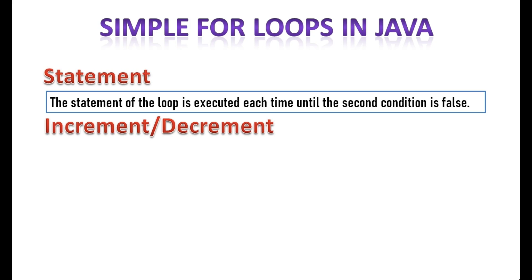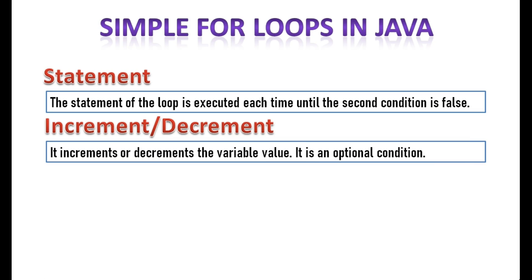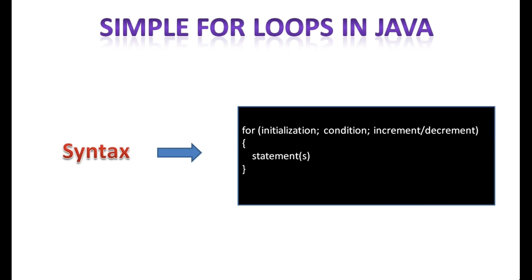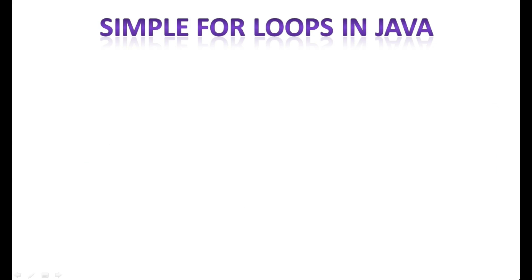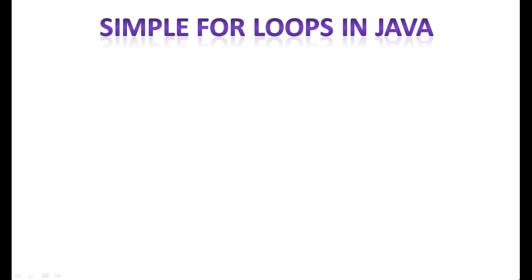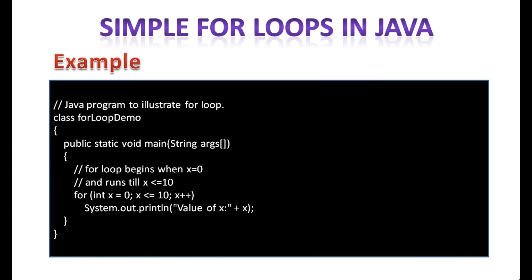Four, Increment decrement. It increments or decrements the variable value. It is an optional condition. The basic syntax of Java for loop goes like this. Now look at this flow chart. An example Java program explaining the functioning of a for loop.